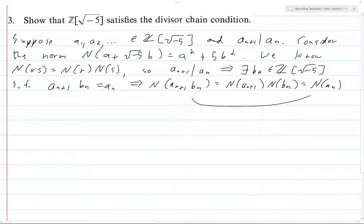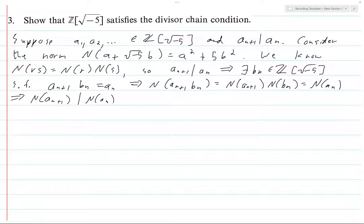Actually, how I should have written it was we know this bigger inequality, but we also know this one, and so all three things are equal. So this implies that N(a_{n+1}) divides N(a_n), and of course this division is taking place in Z, actually in positive integers, but in particular in Z.